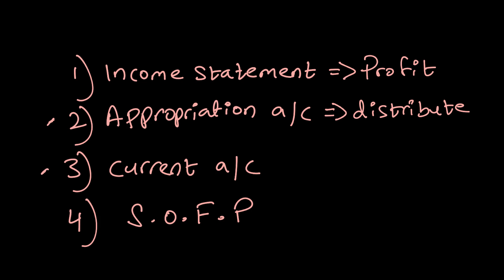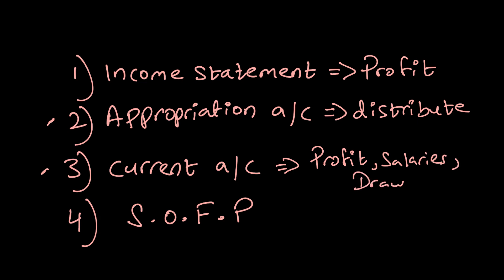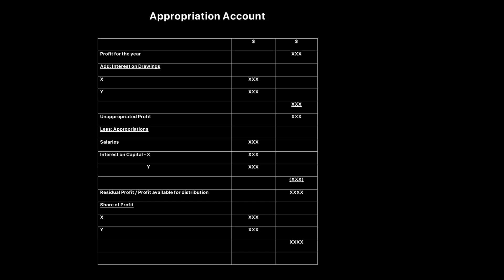After distributing the profit via the appropriation account, we draw something called a current account. The current account shows how profits, salaries, and everything impact the capital account. The idea is to differentiate what is a partner's investment versus their appropriations — profits received, salaries, drawings, etc. All appropriations and distributions during the year flow to the current account, and after that we draw the statement of financial position. The new elements here are the appropriation account and the current account.